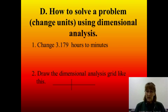So, let's say they give us a question of, can you change 3.179 hours to minutes? Well, if it were a nice even number, we could do that probably in our heads because we're really familiar with hours and minutes. But 3.179 is kind of a weird number. So, the next thing you do is you draw the dimensional analysis grid that looks like what's on the PowerPoint.